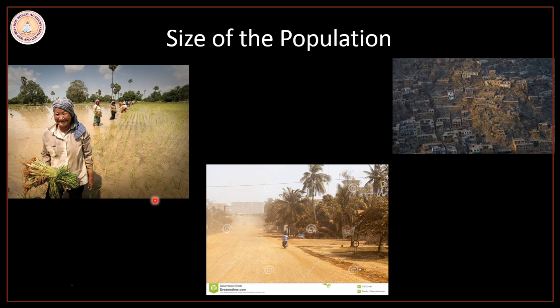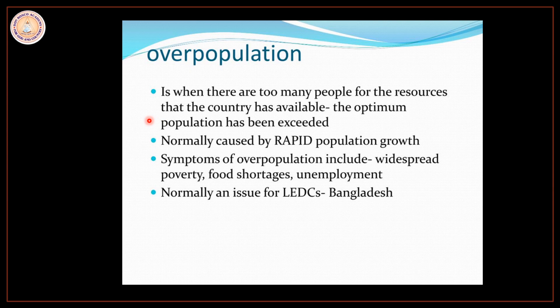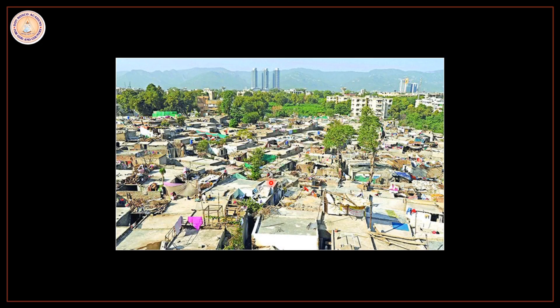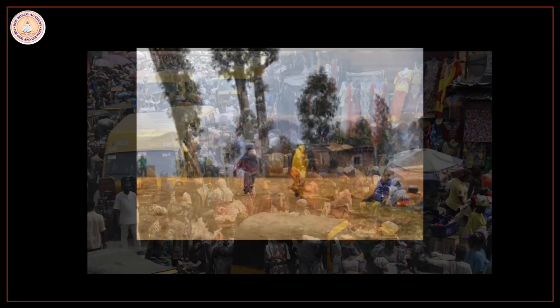Based on the size of the population, most countries of the world are either overpopulated or underpopulated. Overpopulation is a condition where too many people are living with very little resources, the population is growing very rapidly, and there is widespread poverty, food shortage, and unemployment. This kind of condition is normally seen in Pakistan, Bangladesh, Nigeria, and Tanzania, among many others.